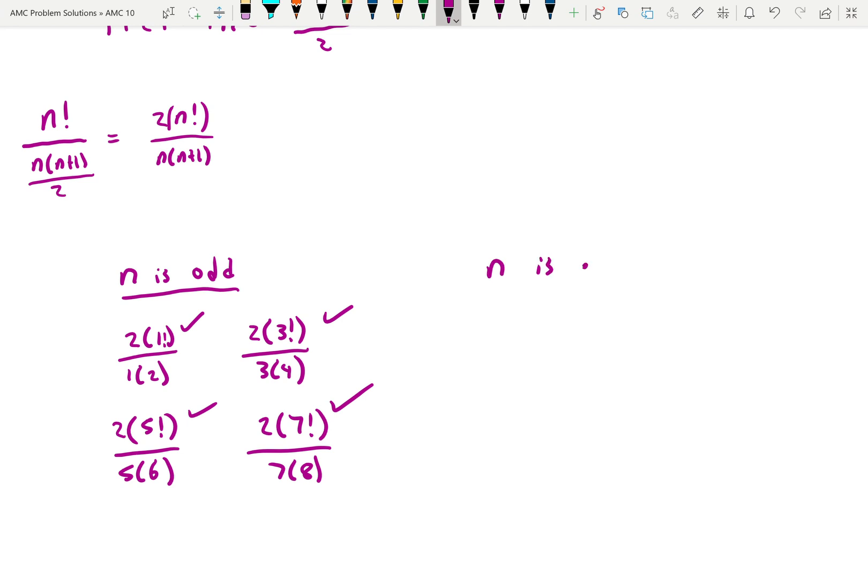Now the case when n is even. And we're going to look at 2 different subcases. So 1 is where we're going to look at the even numbers that are going to work. And hint, it's going to be when n plus 1 is not prime. So 2 times 8 factorial over 8 times 9. So when n is 8, we see that 8 is going to divide 8 factorial. And then 9 is a factor within 7 factorial. So this will work.